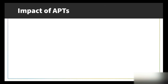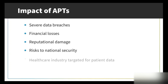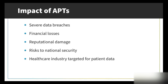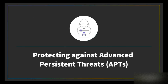The final stages of an APT include data exfiltration — stealing sensitive information — and maintaining persistence to ensure undetected future exploitation. The impact can be devastating, including severe data breaches, financial losses, reputational damage, and risks to national security. The healthcare industry is a frequent target, with attackers stealing patient data to sell on the dark web. Government agencies are also prime targets for espionage and disrupting national security.